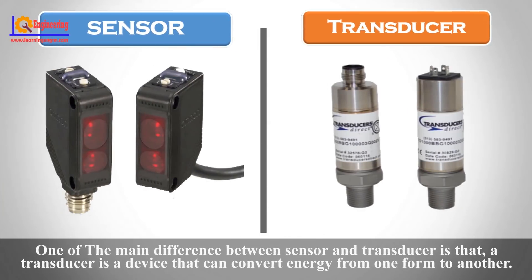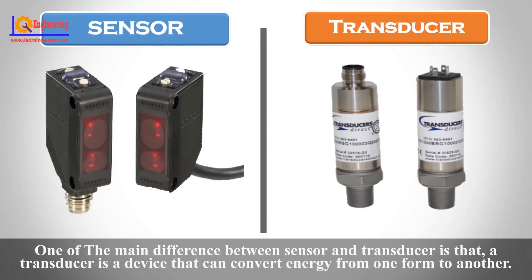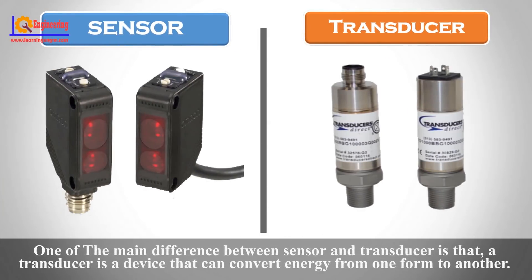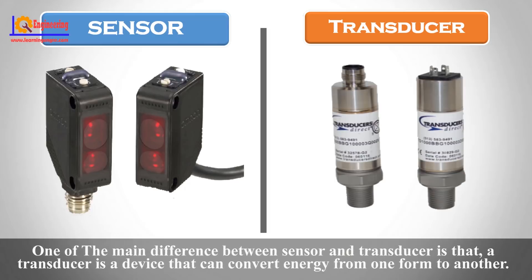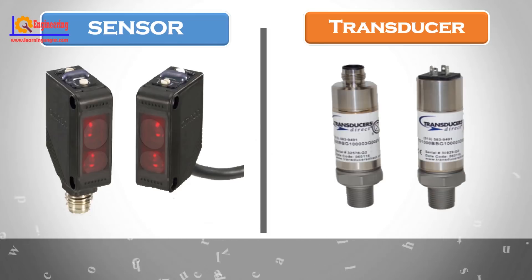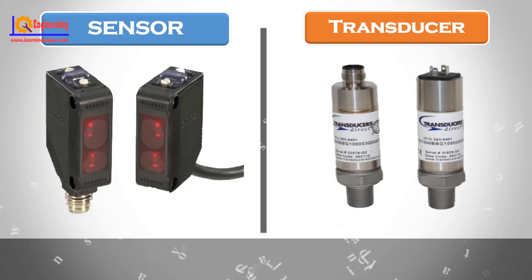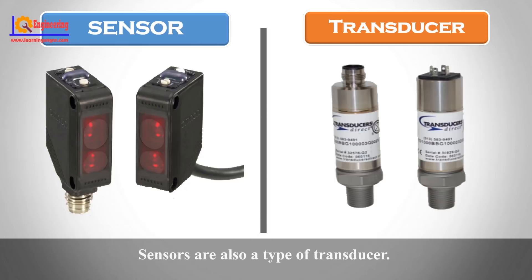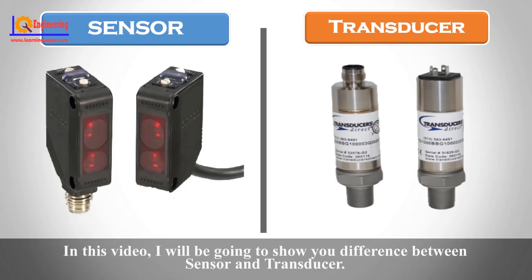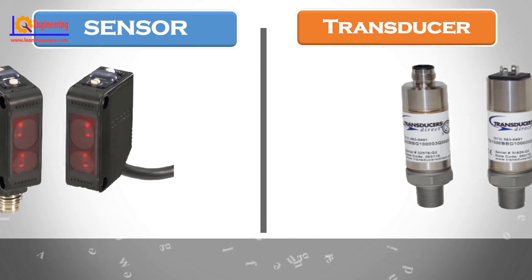One of the main differences between sensor and transducer is that a transducer is a device that can convert energy from one form to another, whereas a sensor is a device that can detect a physical quantity and convert the data into an electrical signal. Sensors are also a type of transducer. In this video, I will be going to show you the difference between sensor and transducer.